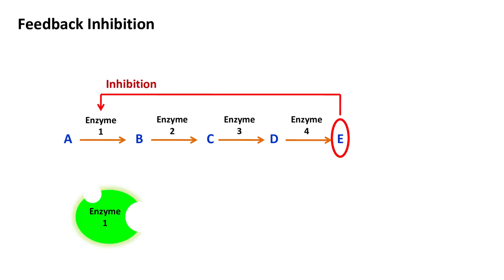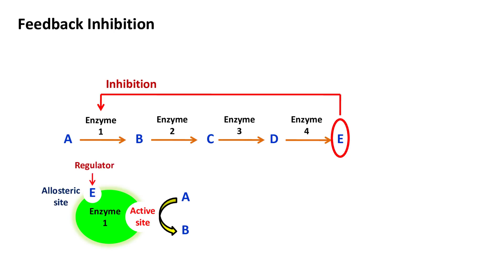The enzyme that is regulated by feedback inhibition has two sites. One is the active site, where the substrate gets converted into product. And the other is the allosteric site, where the end product binds and inhibits the enzyme. The end product binding at the allosteric site is also called a regulator.